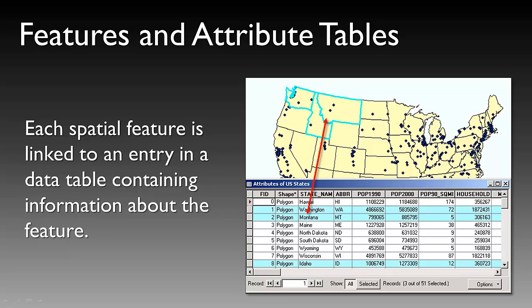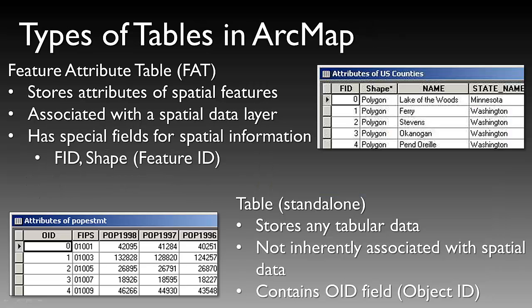As you can see in our example here, we have three states highlighted — Washington, Montana, and Idaho. Each one of those states has a series of attributes that describe that spatial data. When we're discussing tables in ArcMap, there are two different types: a feature attribute table, and a standalone table. The feature attribute table stores attribute data of spatial features and is associated with a spatial data layer. The feature attribute table also has special fields for spatial information, including an FID (feature ID) and a shape field identifying what the shape type is — point, line, or polygon. A standalone table, on the other hand, stores any type of tabular data, but is not necessarily inherently associated with a spatial dataset. Rather than an FID, this standalone table contains an OID, or object ID field, as a unique identifier.